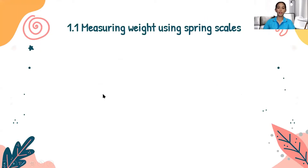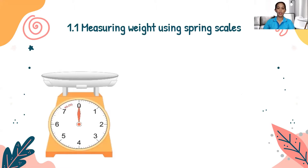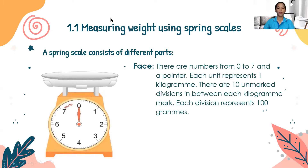Measuring weight using a spring scale. In the picture, you can see a spring scale. A spring scale is used to measure weight, and it consists of different parts. First, we have the face. The face of the spring scale shows numbers 0 to 7 and a pointer. Each unit represents 1 kilogram — so we have 1, 2, 3, 4, 5, 6, and 7 kilograms. There are also 10 unmarked divisions in between each kilogram mark.